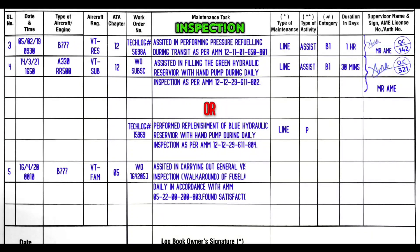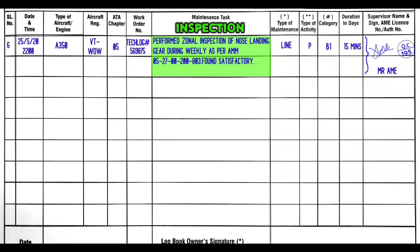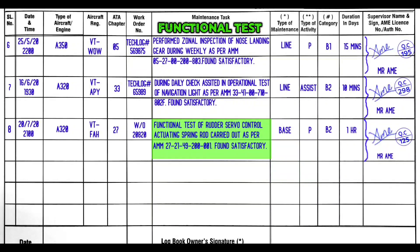Example for inspection: assisted in carrying out general visual inspection of fuselage during daily in accordance with AMM so and so. Result: found satisfactory, or nil defect found. Another example: perform zonal inspection of nose landing gear during weekly as per AMM so and so — found satisfactory. Example for operational test: during daily, assisted in operational test of navigation light as per AMM so and so — found satisfactory. Example for functional test: functional test of rudder servo control actuating spring rod carried out as per AMM 27 — found satisfactory.